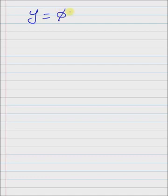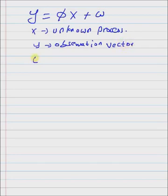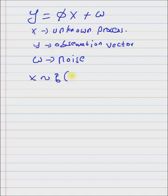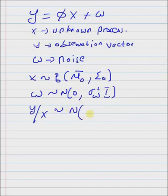Consider the linear model y equals Φx plus w, where x is the unknown process and y is the observation vector, and w is the noise. The prior density of x is N(μ₀, Σ₀). w follows a Gaussian distribution with zero mean and covariance σ²_w I, where I is the identity matrix with dimension n, and n is the length of vector y. The likelihood function p(y|x) also follows a Gaussian distribution with mean Φx and variance σ²_w I.